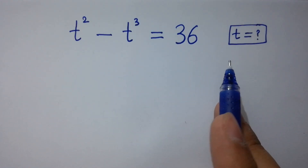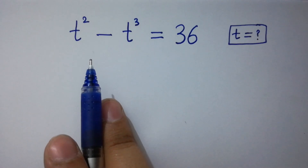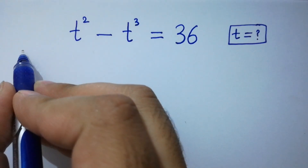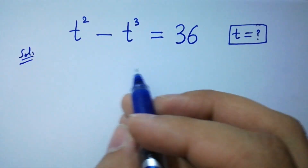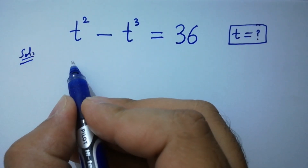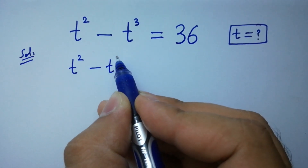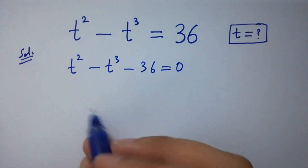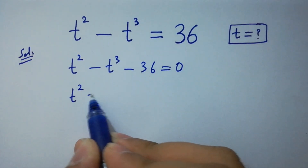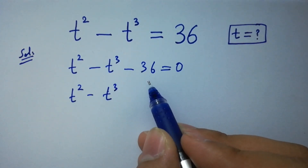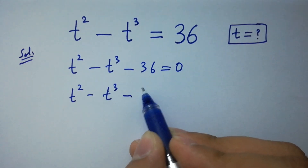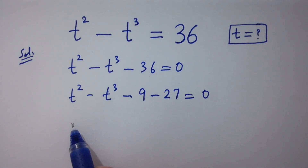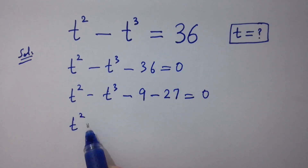Hello friends, find the value of t if t-squared minus t-cubed equals 36. Let's have a solution. It can be written as t-squared minus t-cubed minus 36 equals 0.